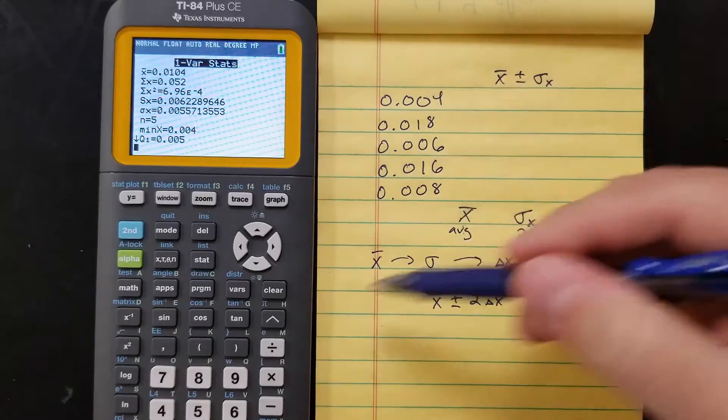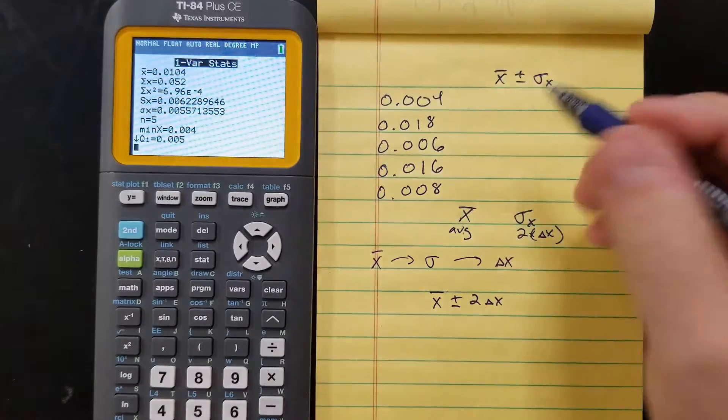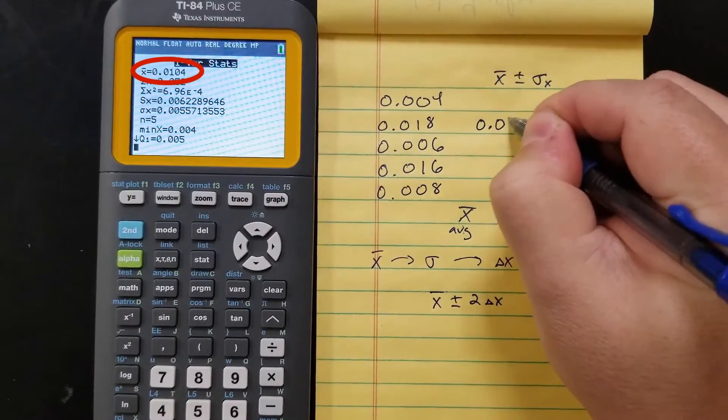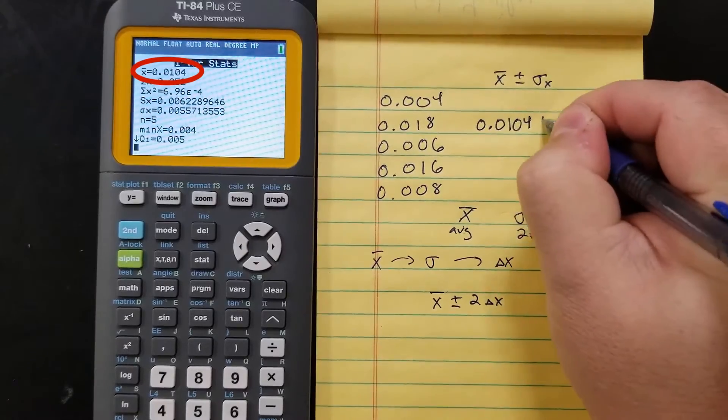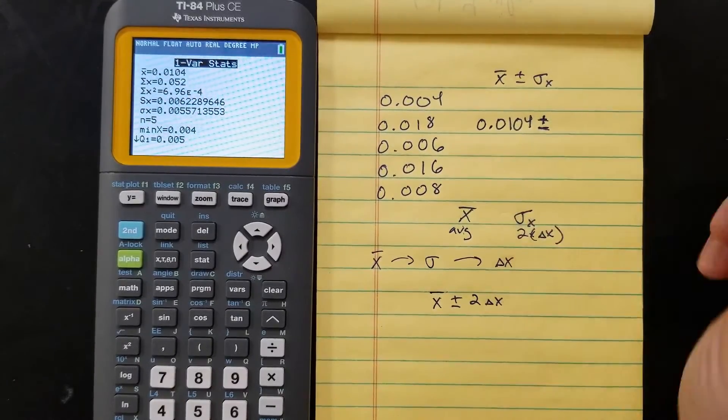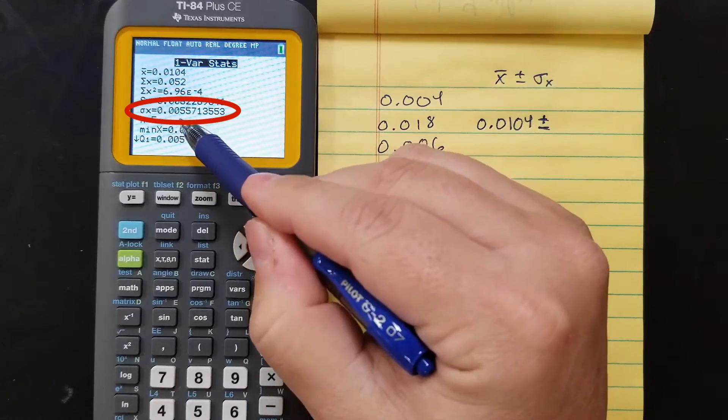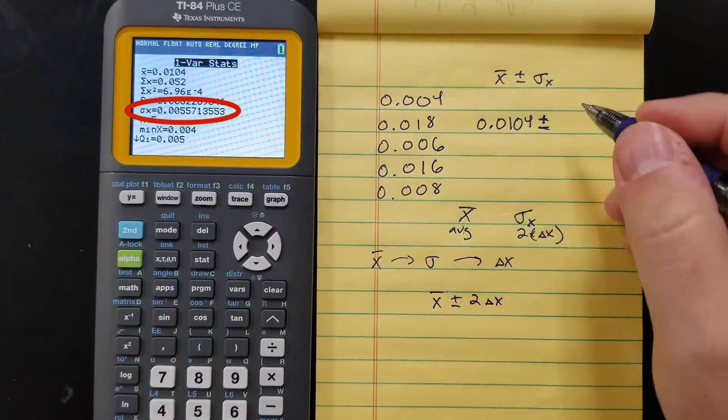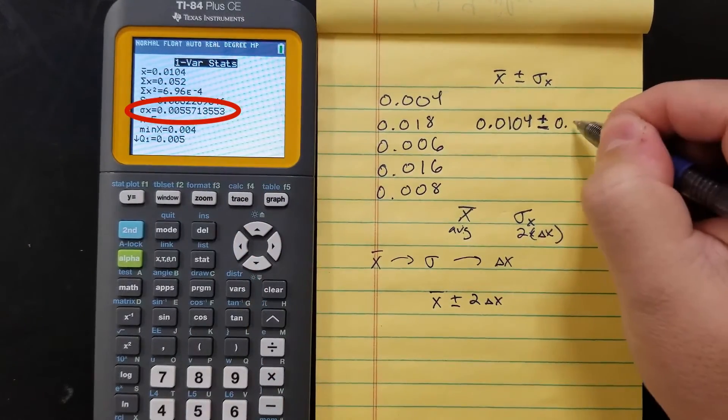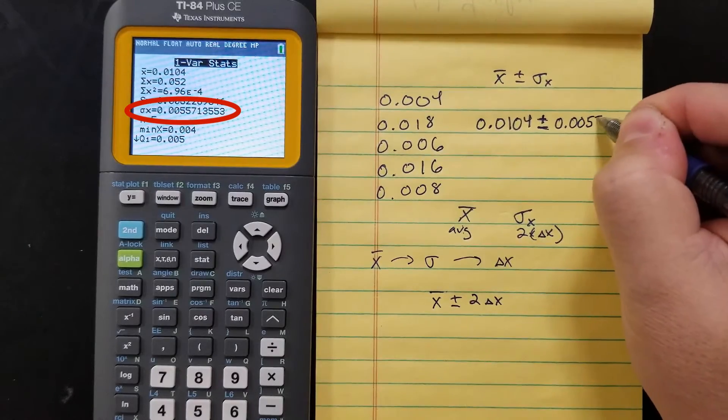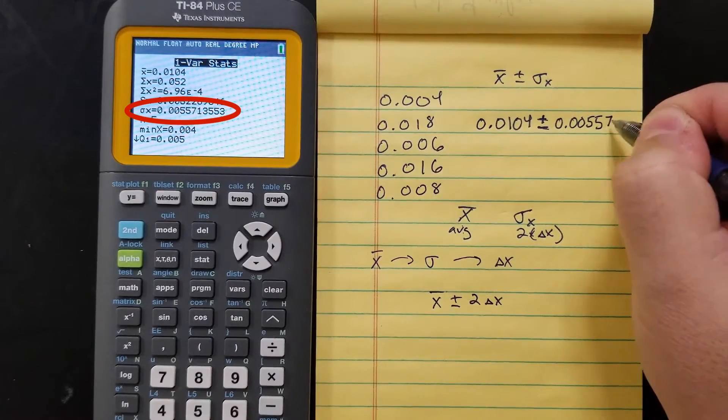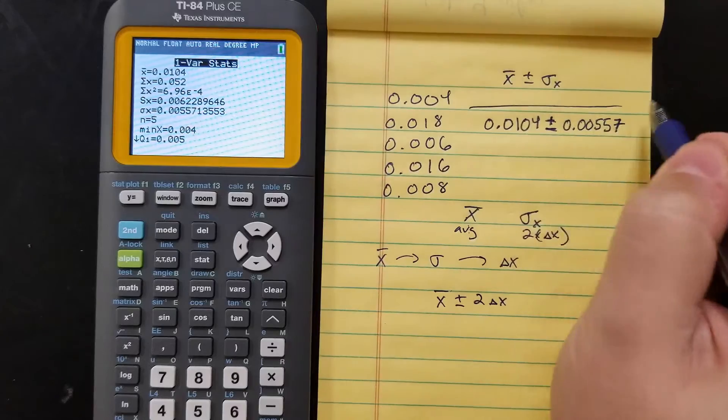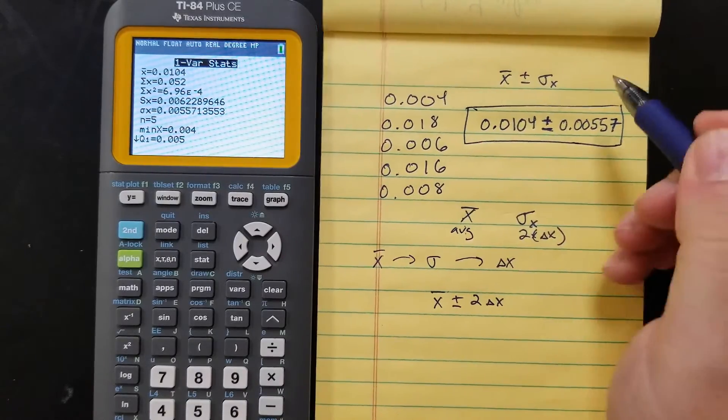So for my data, my average is 0.0104 plus or minus, and then sigma X is 0.00557. So 0.00557. That's my confidence interval for this data.